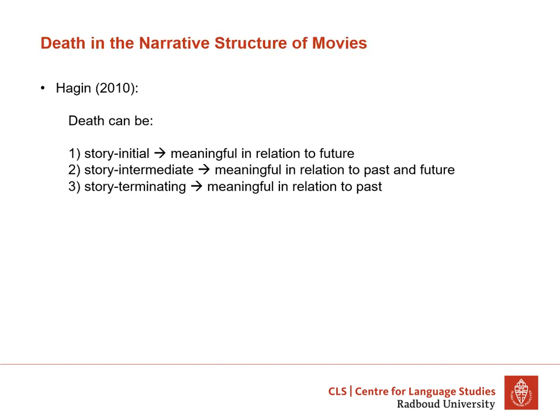In this study we focus specifically on the role of death in the narrative structure of movies, because this has been related to the meaning of death. Hagen developed a framework about the meaning of death and the narrative structure of movies, and he distinguished between three types of death. Story-initial death is when a character dies at the beginning of the story, and such deaths are meaningful in relation to the future — they can alter or set up new goals for a character, or put a character in a new social position.